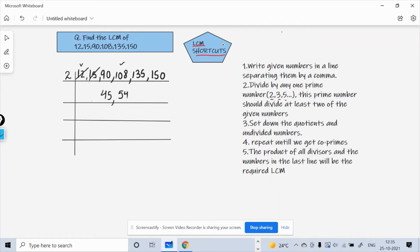You get 54 as a quotient, and 135 cannot be divided, so in that case I'll write 135 as it is. And when I divide 150 by 2, my quotient will be 75.